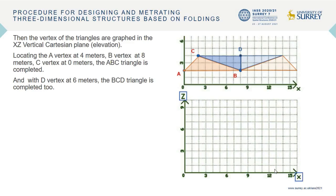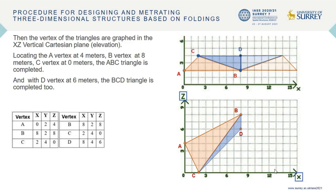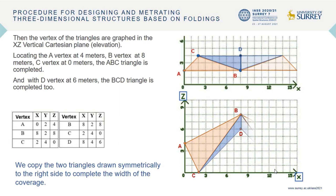Locating the A vertex at 4 meters, B vertex at 8 meters, and C vertex at 0 meters, the ABC triangle is completed. With D vertex at 6 meters, the BCD triangle is completed too. We copy the two triangles drawn symmetrically to the right side to complete the width of the coverage.